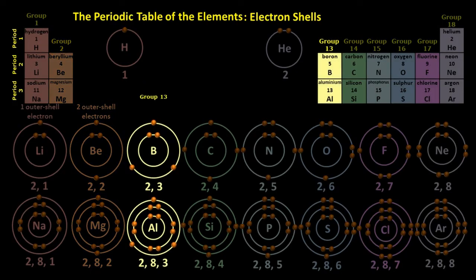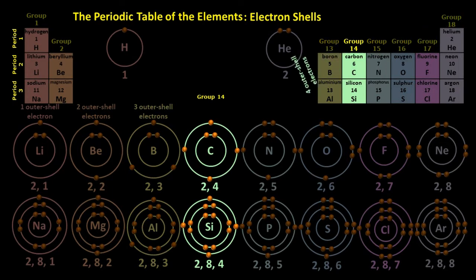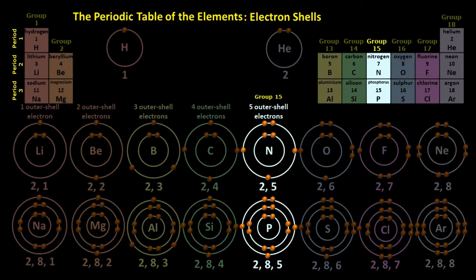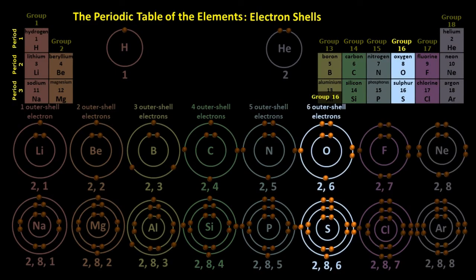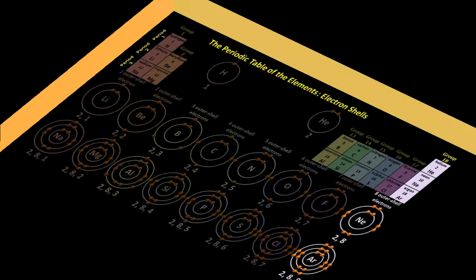To continue the trend, we have to skip over to group 13, not group three, but group 13. In group 13, the atoms all have three outer shell electrons. The atoms in group 14 all have four outer shell electrons, and the pattern continues until group 18, where all the atoms have eight outer shell electrons.